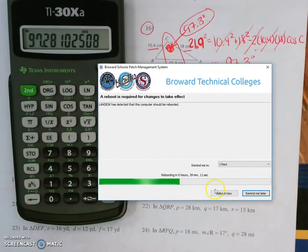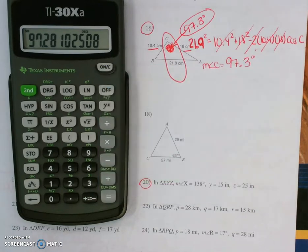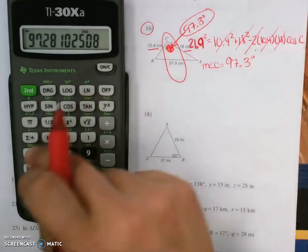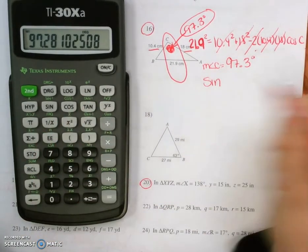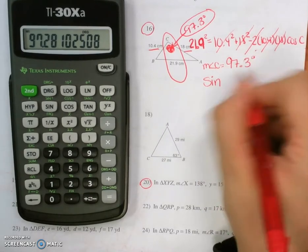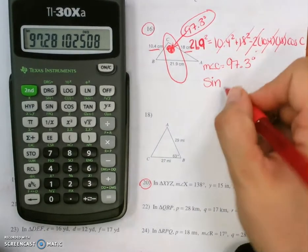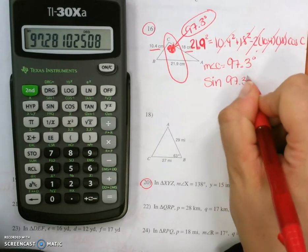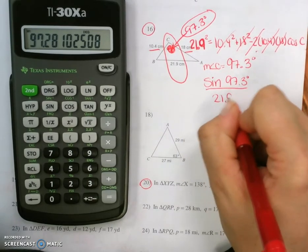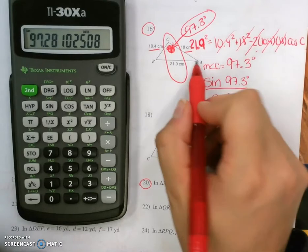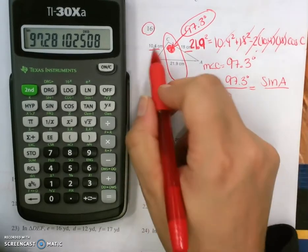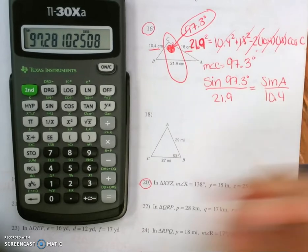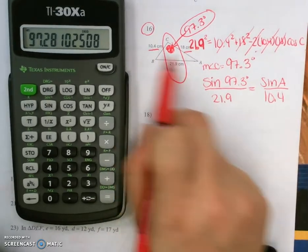Now what we can do in order to find another side is we can use law of sines. Let's store this in one. So the sine, and we can honestly use a rounded degree for this. So sine of 97.3 degrees is to side 21.9 as sine of a is to 10.4. The side opposite a. Angle a goes with the side opposite a.